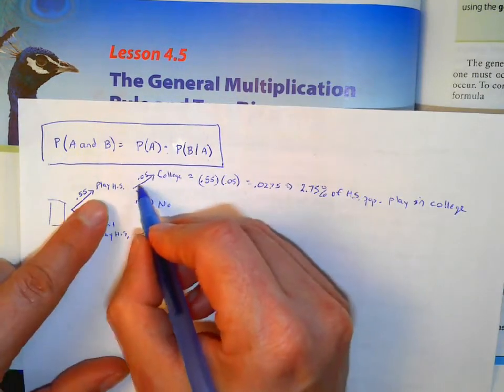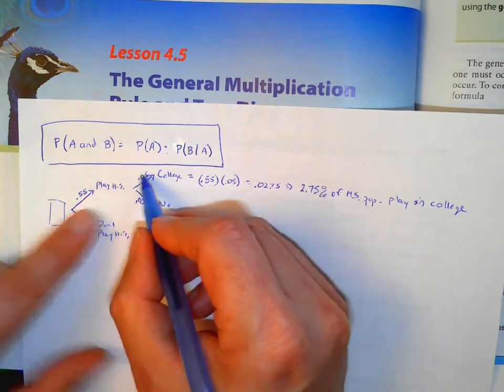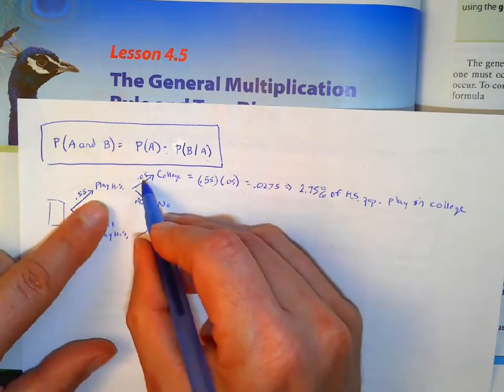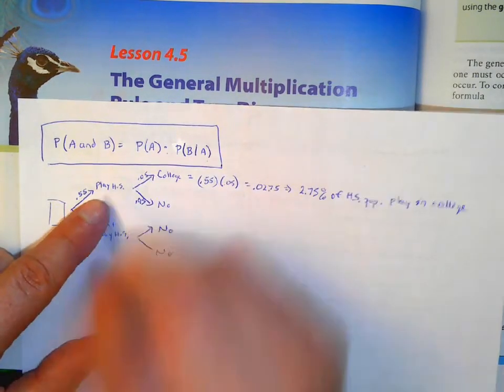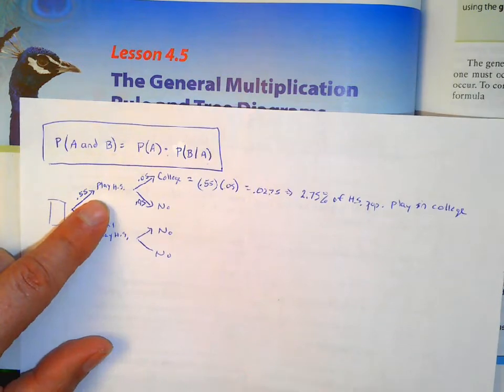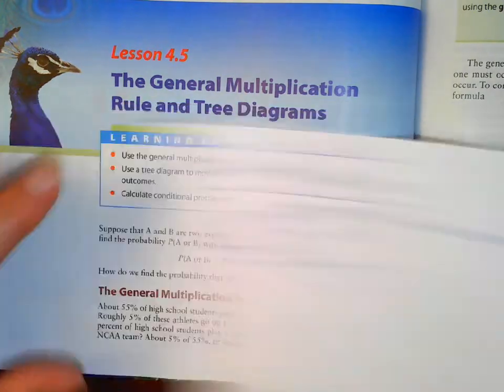So it's not 5% of overall — it's 5% of those playing high school sports.